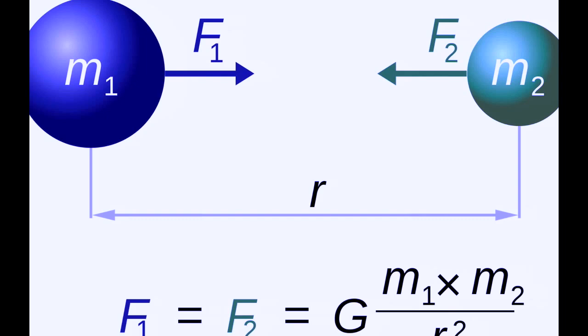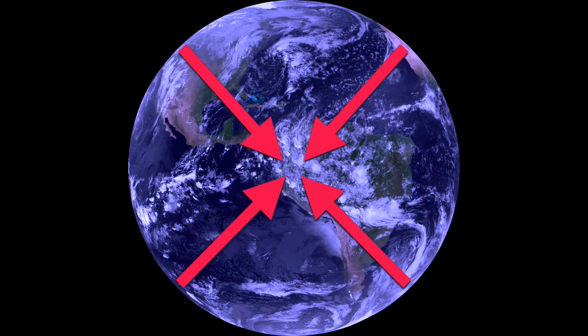The closer objects are together, the stronger the pull; the bigger they are, the stronger the pull. Our Earth has a force of gravity directed towards the center, and that pull is what helps shape the planet into a sphere, because every inch of the outer surface — even our atmosphere — is being pulled towards the center. That applies to any object in our solar system. The only exception is asteroids, because they are so small that the gravity they create isn't strong enough to shape them into a true perfect sphere, though they do have rounded parts because they still feel the effects of gravity.